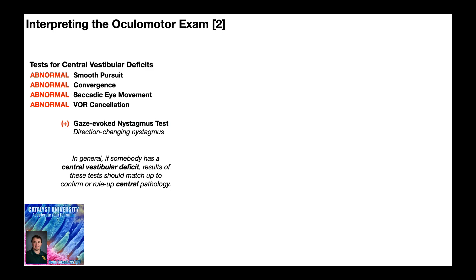So if somebody presents with these impairments, what is your treatment approach? In general, the treatment approach for central vestibular deficits is going to be habituation — you're going to be prescribing habituation exercises. However, individuals with a central vestibular deficit can also have impaired gaze stabilization. The tests more suggestive of peripheral deficits — positive head thrust, positive head shaking nystagmus, and positive gaze-evoked nystagmus with direction-fixed nystagmus — are indicative of hypofunction, and the treatment would be adaptation exercises, but in this case those are all negative.